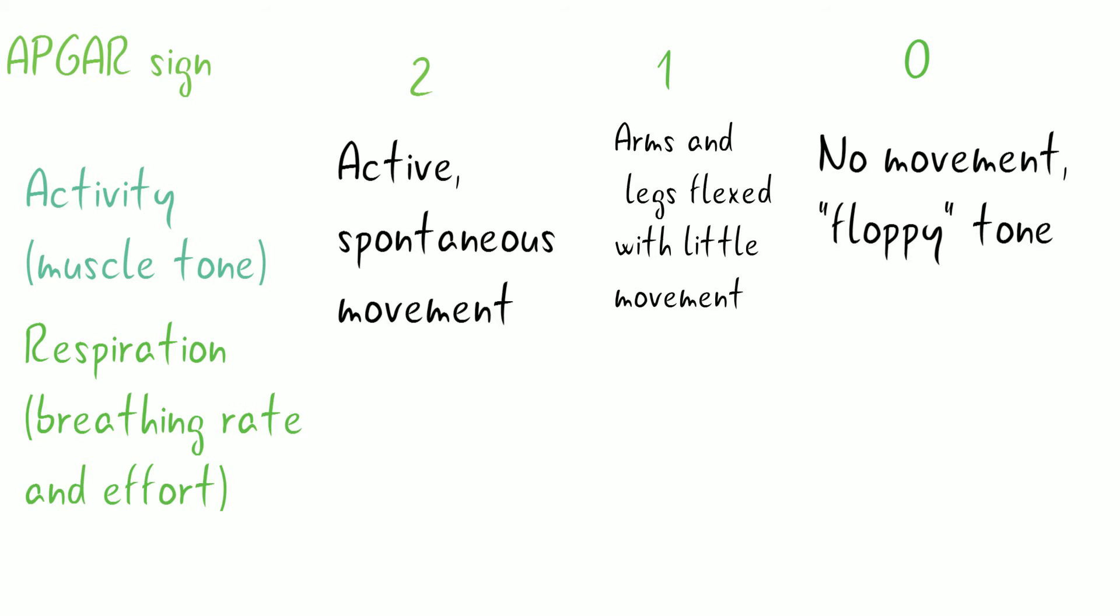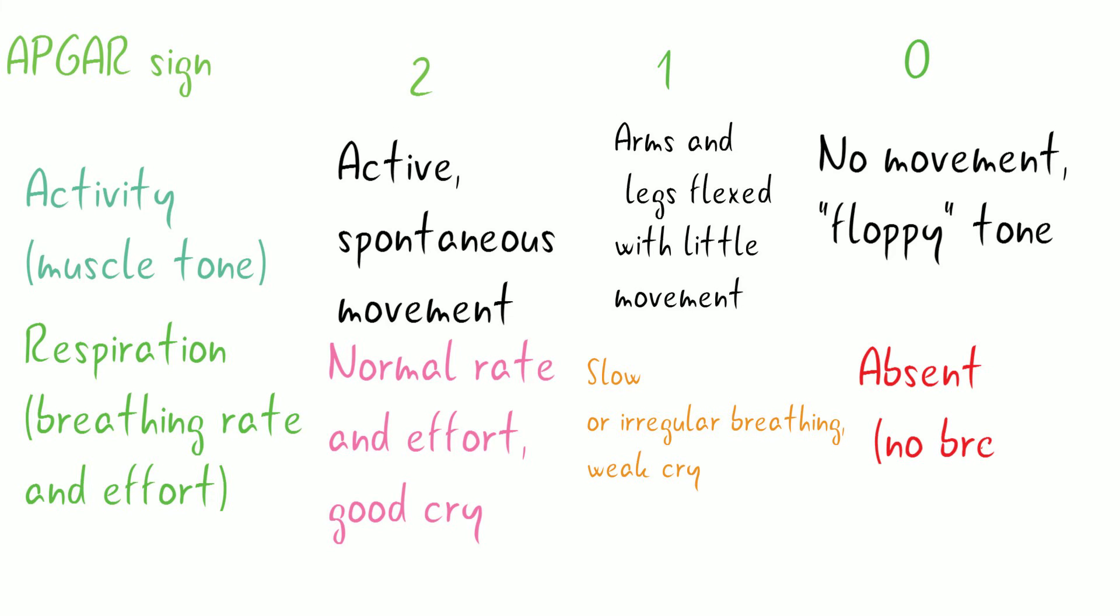For Respiration, a score of 2 is given for normal rate and effort with a good cry. 1 is given for slow or irregular breathing with a weak cry. 0 is given for absent breathing.